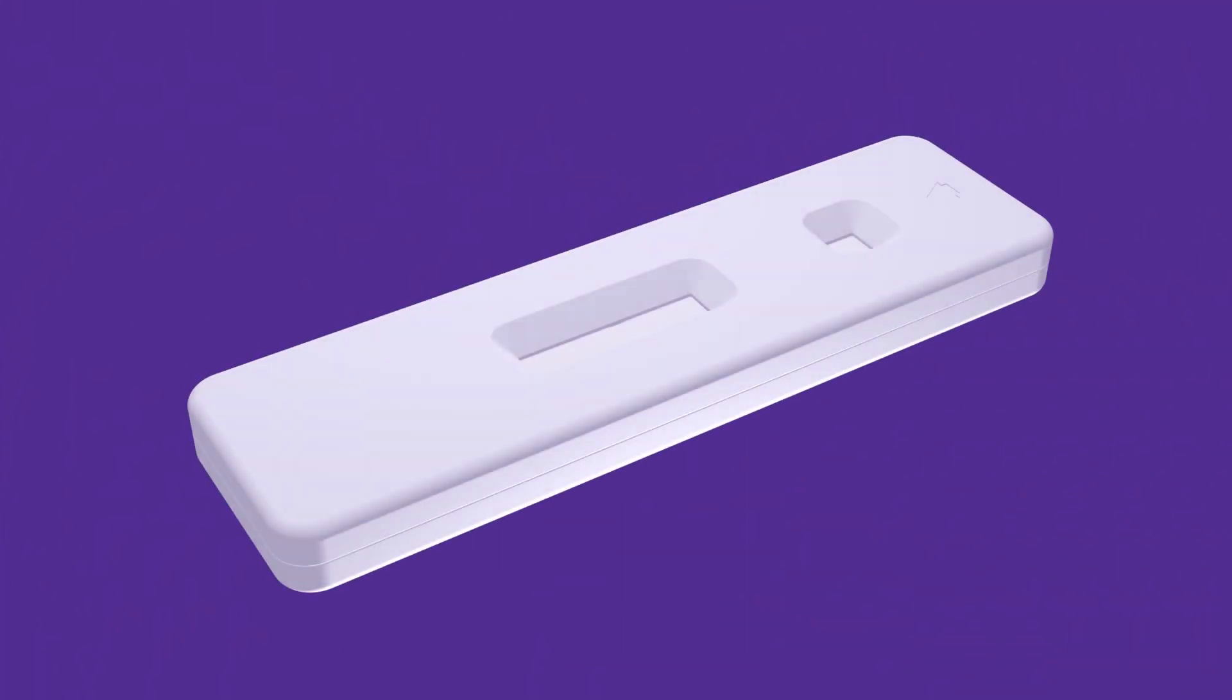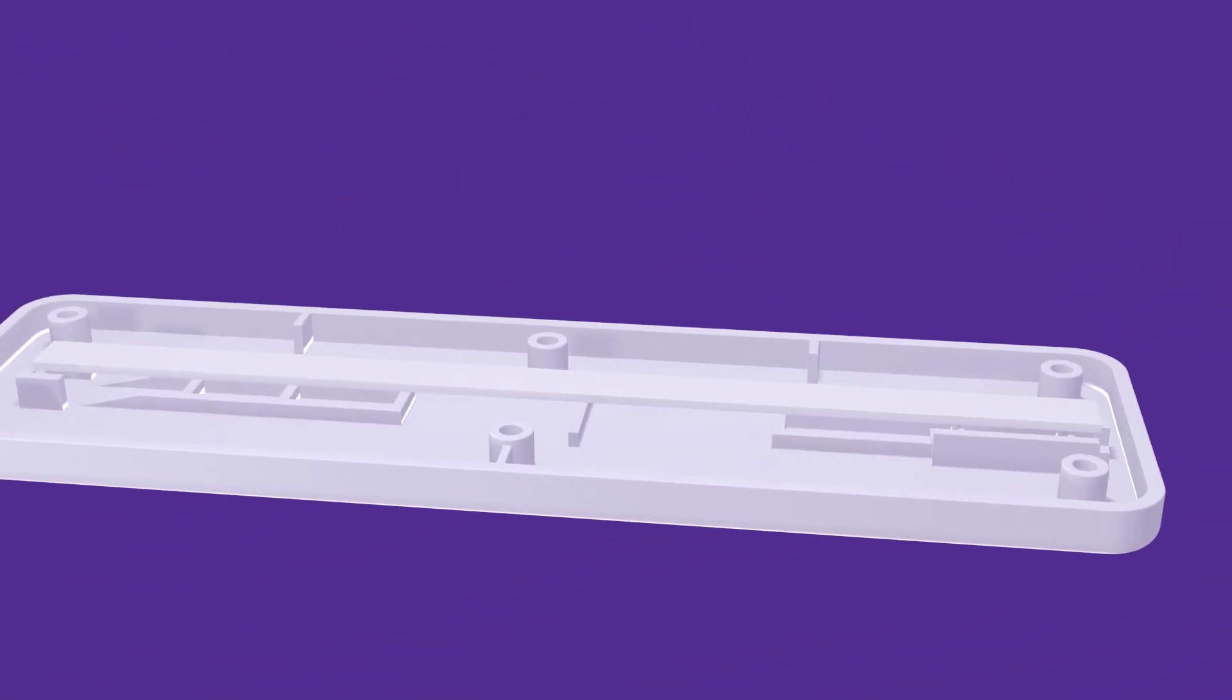Here's how a typical lateral flow test works. A sample, typically obtained by saliva, blood, or urine, is added to the sample pad.